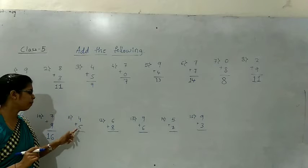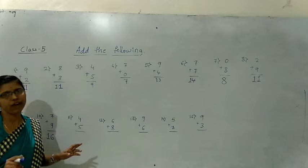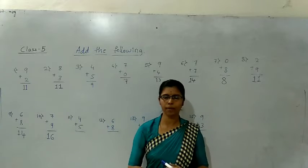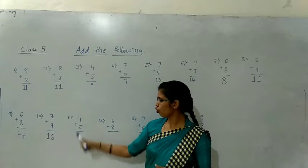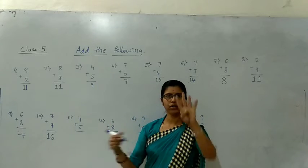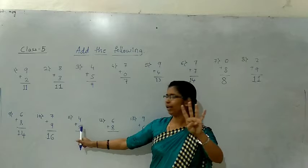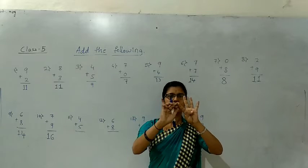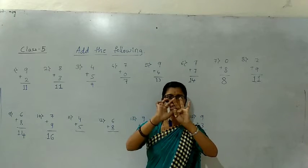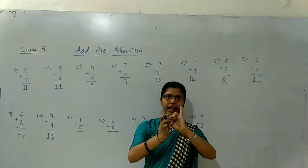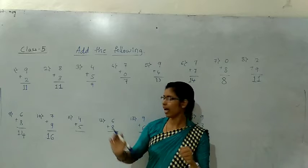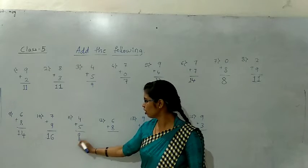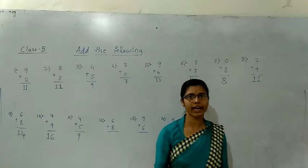Now 4 plus 5 — we should hold 4 fingers. The below number is 5. After 5: six, seven, eight, nine. The answer is 9.